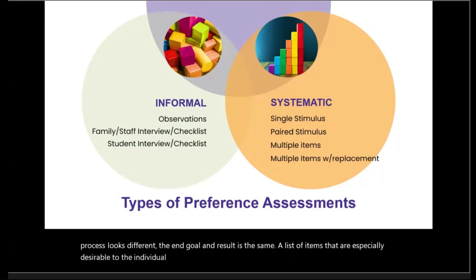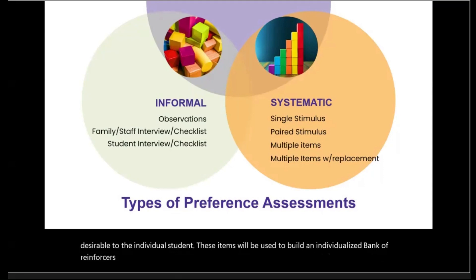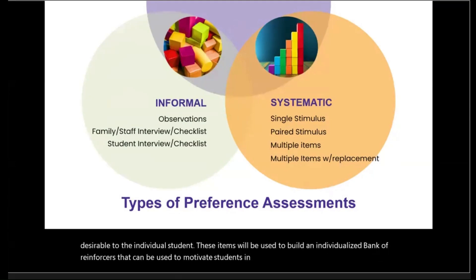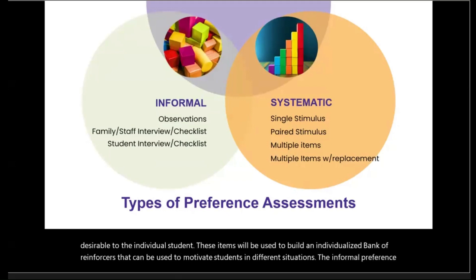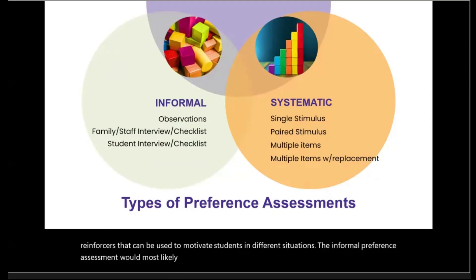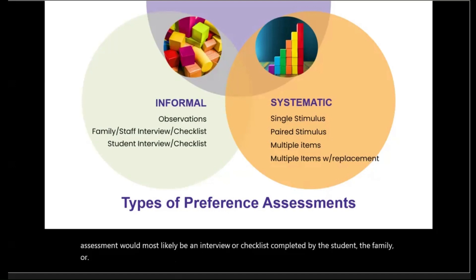There are informal preference assessments and systematic preference assessments. While the process looks different, the end goal and result is the same: a list of items that are especially desirable to the individual student. These items will be used to build an individualized bank of reinforcers that can be used to motivate students in different situations. The informal preference assessment would most likely be an interview or checklist completed by the student, the family, or very familiar staff.